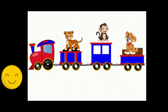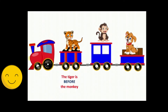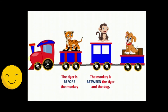So, where is the tiger? The tiger is before the monkey. Where is the monkey? The monkey is between the tiger and the dog.